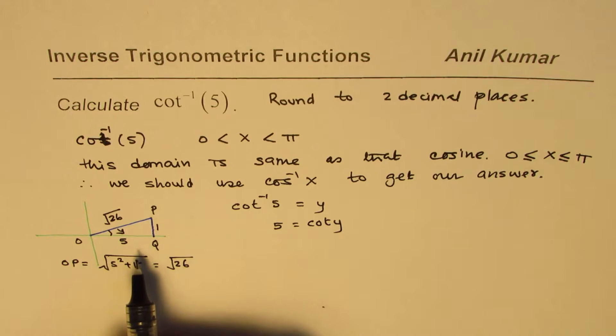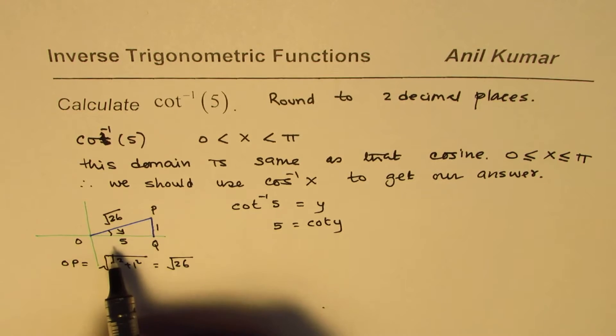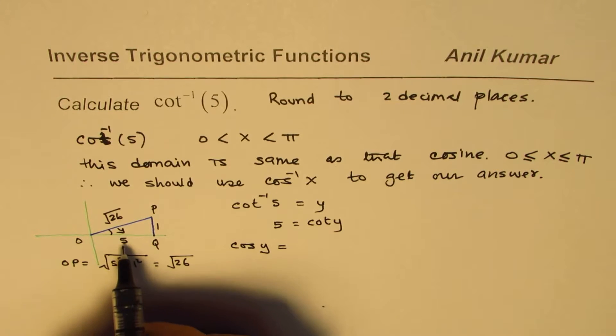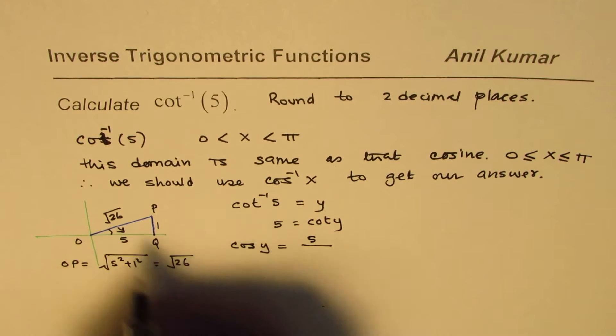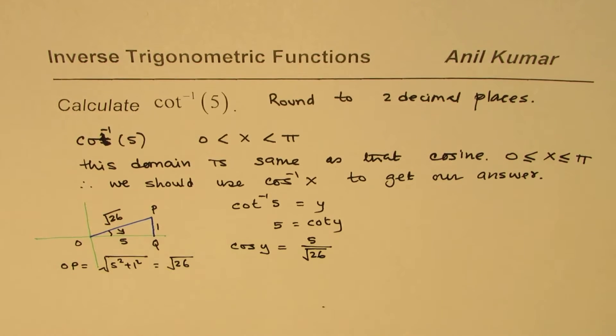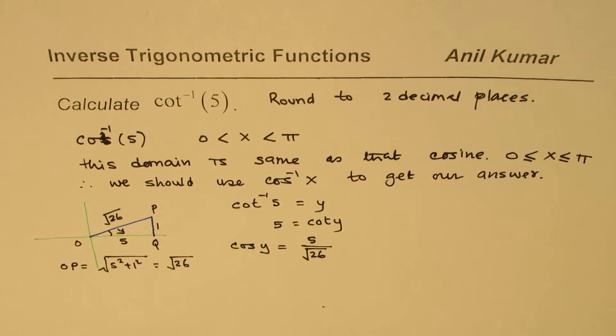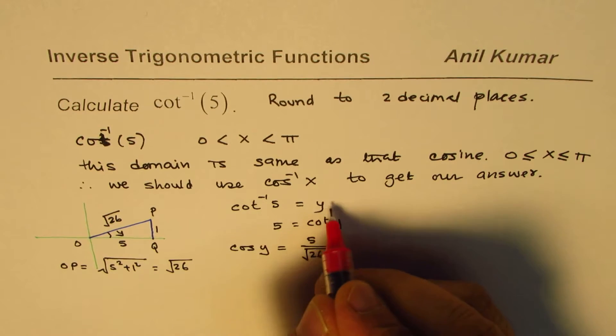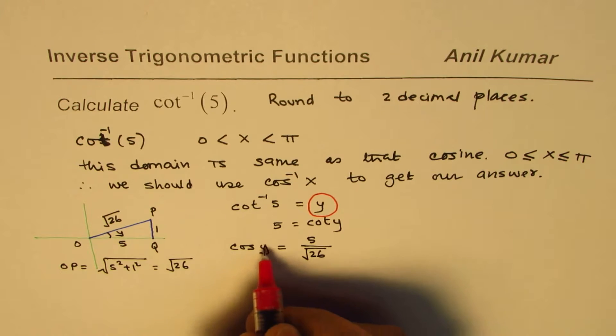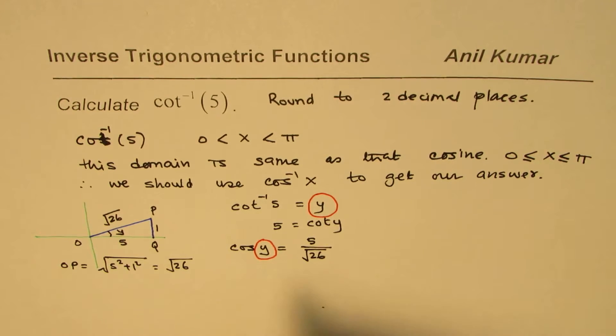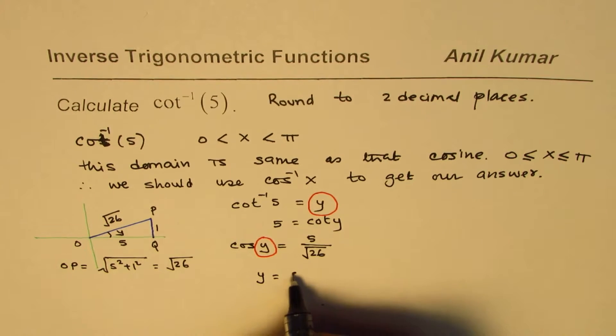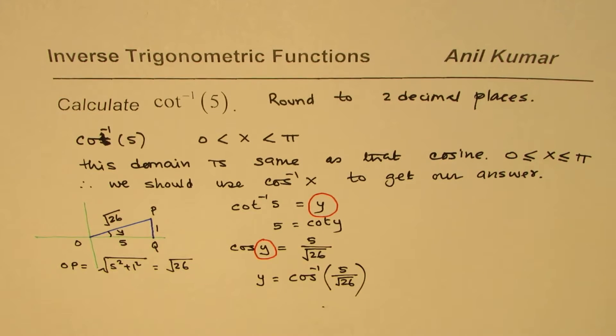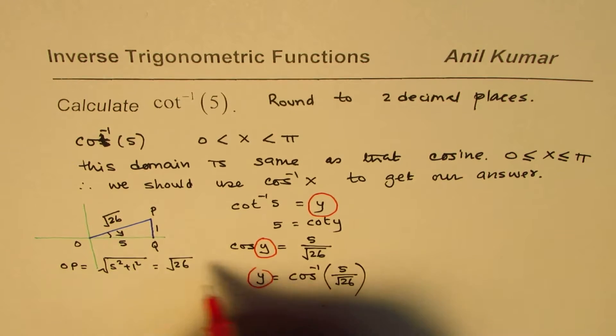Now we can also find what cos y is. From here, cos y equals the adjacent side 5 over √26. It's the same y. The idea is to calculate cot⁻¹(5), we need to find what y is. We can easily find it using the cosine function. We can say y equals cos⁻¹(5/√26).